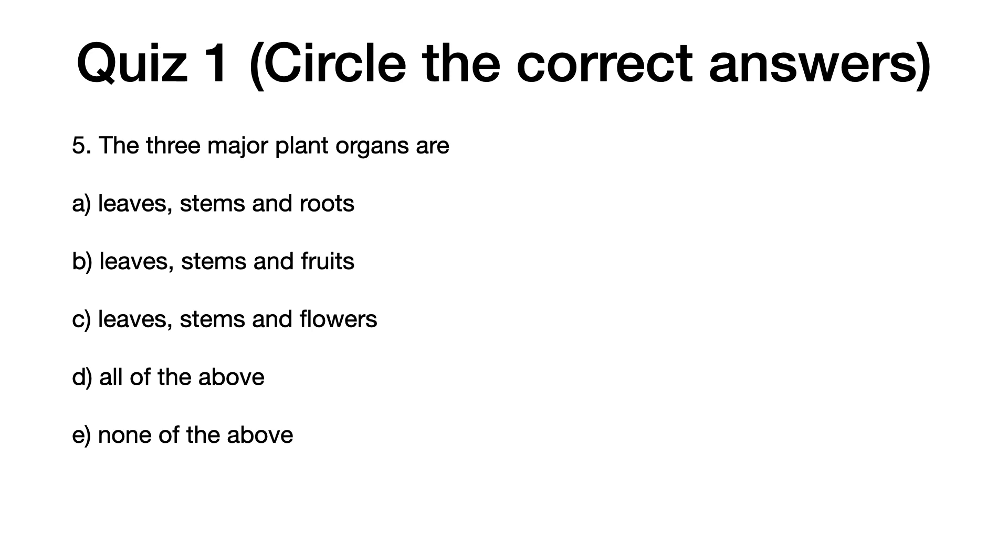Question five: The three major plant organs are. A: leaves, stems and roots. B: leaves, stems and fruits. C: leaves, stems and flowers. D: all of the above. E: none of the above. The correct answer is A, leaves, stems and roots.